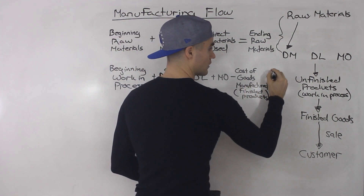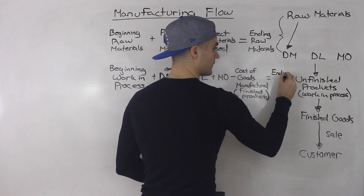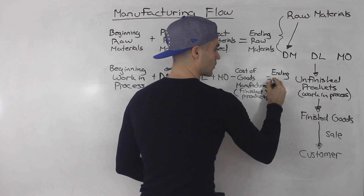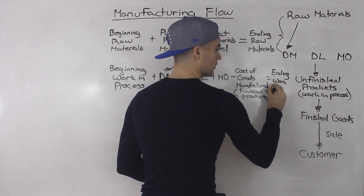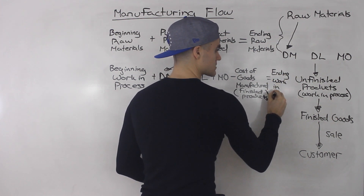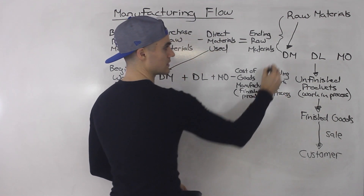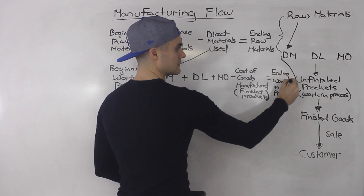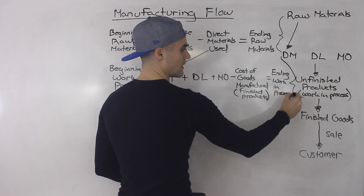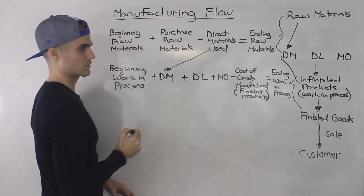After those finished products leave production, you're going to end up with ending work in process — the products you're still working on. That's the work in process flow.